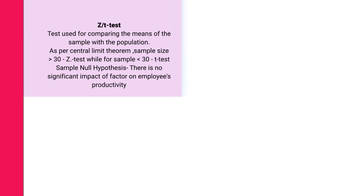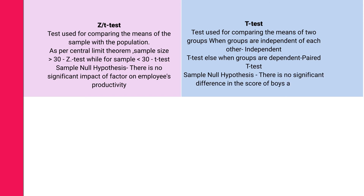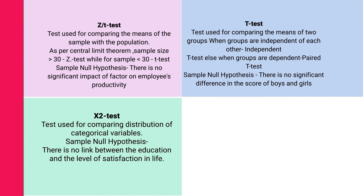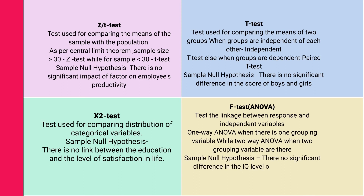For one-way ANOVA, degrees of freedom = n₁ − 1 and n₂ − 1, testing differences among three or more population means, formula: F = S₁² / S₂². Per the central limit theorem, for sample size ≥ 30 use z-test; for sample size < 30 use t-test. The chi-square test compares distribution of categorical variables. For ANOVA (F-test), one-way ANOVA is used when there is one grouping variable, two-way ANOVA when there are two.